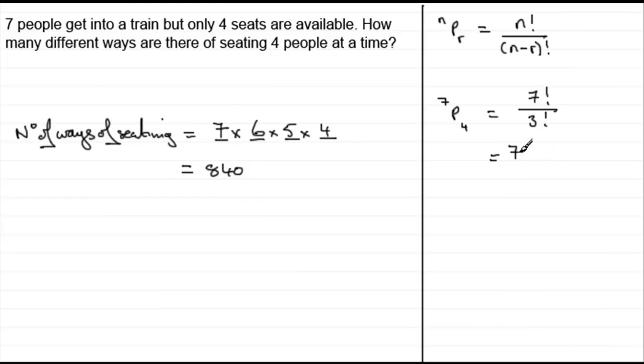So what is seven factorial? Well, it's seven times six times five times four times three times two times one. And all that is divided by three factorial, which is three times two times one. And can you see what happens? This is designed so that that cancels out with the three, two, one down there. And it just leaves us with seven times six times five times four, the calculation we did here.